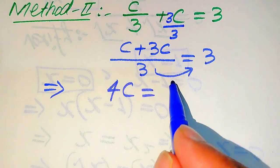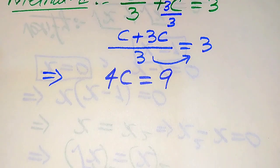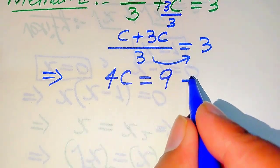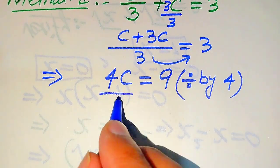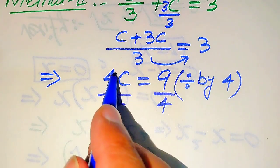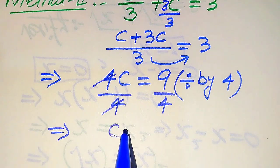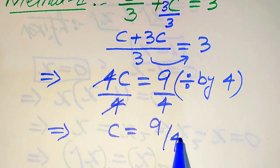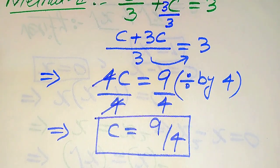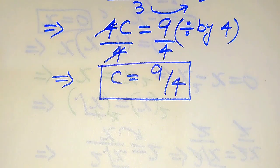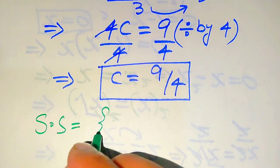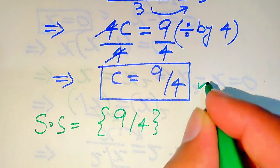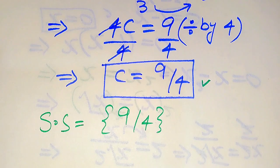We get C plus 3C equals 4C equals 9. Dividing both sides by 4, this 4 cancels and we get C equals 9 divided by 4. Since we already verified this value in the first method, we conclude the solution set for the second method is also 9 divided by 4.